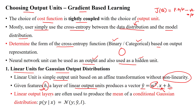Linear output layers are frequently used to produce the mean of a conditional Gaussian distribution, which can be represented as the predicted probability of output y given input features x — that is, the Gaussian distribution of y. We predict the value y_cap with respect to the given distribution.